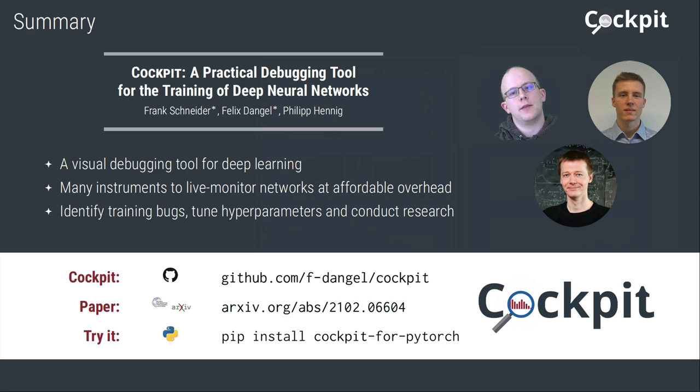Traditional debuggers, on the other hand, offer access to all the individual weights, but this does not provide insight. Instead, we propose Cockpit, a visual and practical debugging tool specifically designed for deep learning. It offers multiple instruments to monitor the training process, and although some of these instruments use rich, second-order information, efficient computation keeps the necessary runtime overhead affordable.